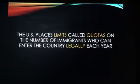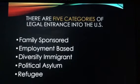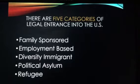The United States places limits called quotas on the number of immigrants who can enter the country legally each year. There are five categories through which a legal alien can gain entrance into the United States: family-sponsored, employment-based, diversity immigrant, political asylum, and refugee.